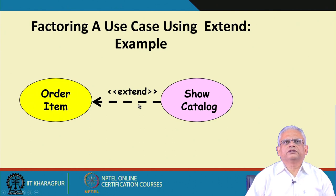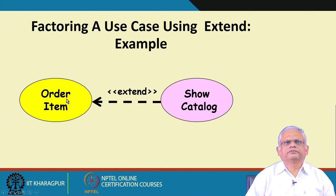The notation for extend is almost similar to include — a dotted arrow with an open arrowhead — but the stereotype is 'extend.' Another key difference to notice: in the include relationship the arrowhead points toward the included use case and the label is 'include,' but in extend the arrowhead points toward the base use case and the label is 'extend.' Also, the included use case in include is compulsorily invoked, but in extend it is optional.